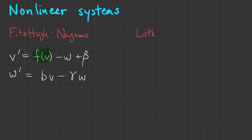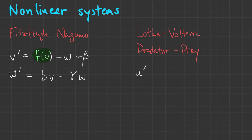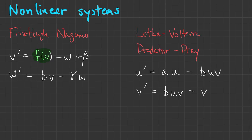Another famous example are the Lotka-Volterra equations, also called the predator-prey equations. This is a simple system of two equations and two variables. U represents a prey species that tends to grow when on its own, but is predated by species V. V gains from interactions with U but dies out on its own.